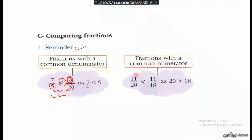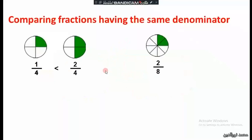For fractions with the same numerator, the rule is inverted. Here we have 11 over 20 and 11 over 18. Since 20 is greater than 18, we invert the sign: 11 over 20 is less than 11 over 18.